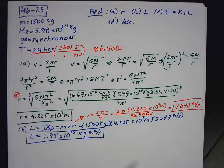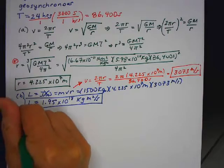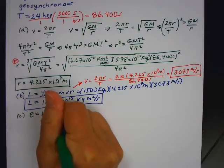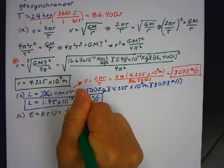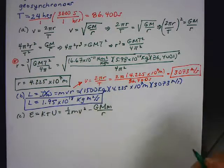All right, part C says, find, determine the total energy. So the total energy E is the sum of K plus U. So that's going to be 1/2 mv² minus GMm over R.